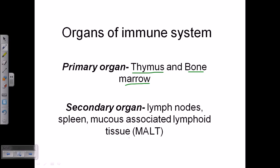Secondary organs are not as important as primary organs — they are not chief organs. Rather, they help establish the total immune response inside our body, supporting the primary organs. These secondary organs include lymph nodes, spleen, mucosa-associated lymphoid tissues, and different associated lymphoid tissues like gut-associated lymphoid tissue (GALT). These secondary organs help thymus and bone marrow in producing immune response soldiers to protect our body.